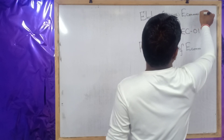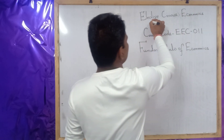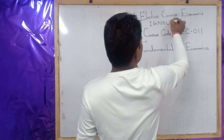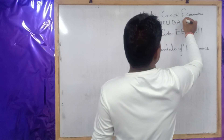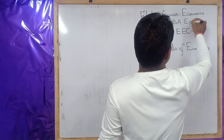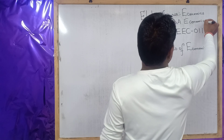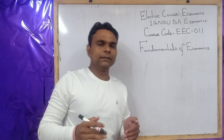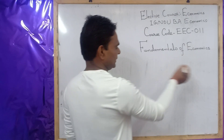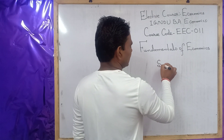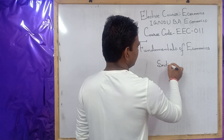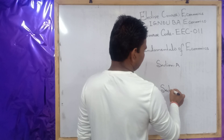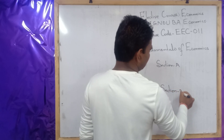This is for First Year IGNU BA Economics. First I will explain the structure of this paper. This paper has 3 segments — 3 sections: Section A, Section B, and Section C.